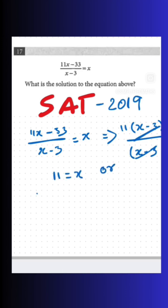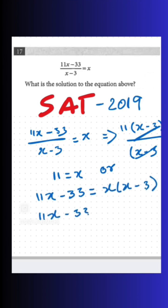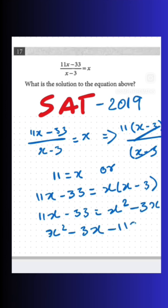But we also have another way of solving this — as a quadratic equation. If we multiply both sides by (x minus 3), we get 11x minus 33 equals x squared minus 3x. Rearranging gives us x squared minus 3x minus 11x plus 33 equals zero.